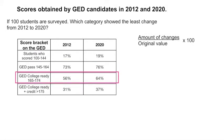Then we go for the third category, the college ready folks. How much change did we have from 2012 to 2020? We would say 64 minus 56 divided by 56 times 100, and that gives you a change of 14.28%.